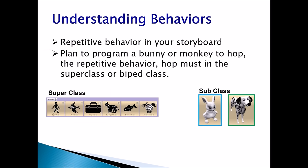Understanding behaviors: when you have an action in your storyboard that needs to be repeated, that is repetitive behavior. If you plan to program a bunny or monkey to hop, the repetitive behavior — hop — must be in a superclass or a biped class. Quick review: superclasses are the main classes like biped, flyer, prop, etc. Subclasses like bunny and dalmatian — this is a biped class because it has two legs, and this is a quadruped class because it has four legs.